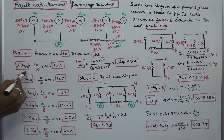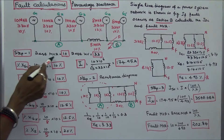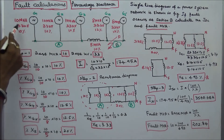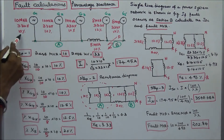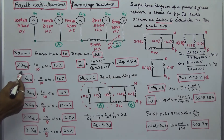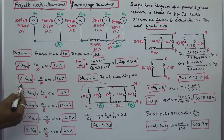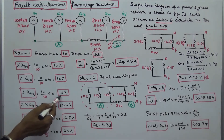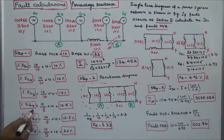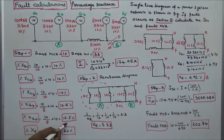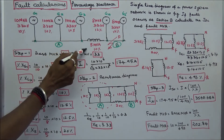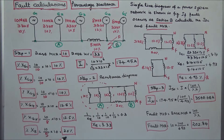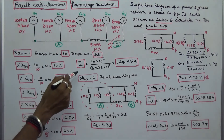Percentage XG1 is equal to (base MVA 10 divided by rated MVA 10) multiplied by given percentage reactance 10, therefore percentage XG1 is equal to 10%. Similarly, percentage XG2 is equal to 10%. Percentage XG4 is equal to 12.5%, XG5 is equal to 12.5%. The reactor percentage reactance is 20%.